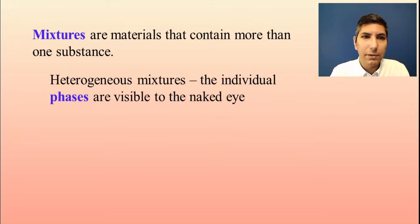There are two types of mixtures. The first type is a heterogeneous mixture, and that's a mixture in which the individual components of that mixture are visible to the naked eye. And those individual components, we call those phases. For example, if you're looking at a salad, the lettuce would be one of the phases, and the tomatoes would be another phase, and the cucumbers would be another phase. Heterogeneous mixtures have phases that you can see with the naked eye.